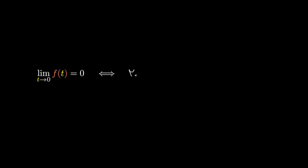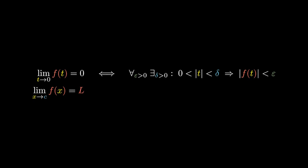We say that a function has limit zero as t approaches zero precisely when, for any output threshold epsilon, you can find an input threshold delta such that when the inputs are constrained by delta, the outputs are constrained by epsilon. We say that the function f has a limit L as x approaches c precisely when this modified function has limit zero.